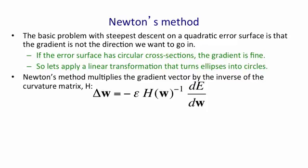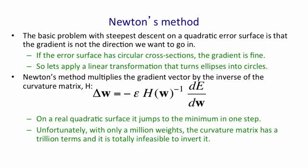Of course, that single step involves something complicated, which was inverting that Hessian matrix. The problem with this is that even if we only have a million weights in our neural network, the curvature matrix, the Hessian, will have a trillion terms. It's completely infeasible to invert it.